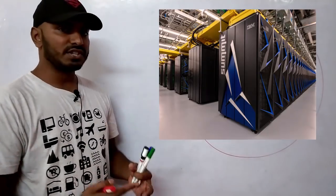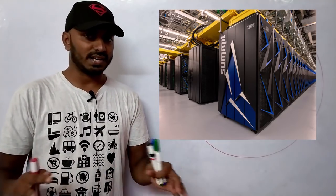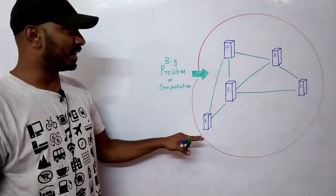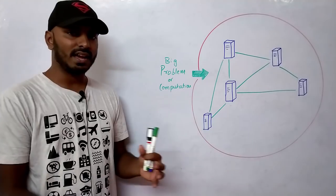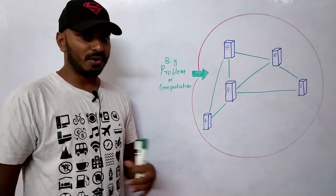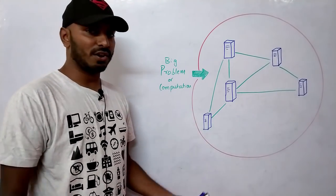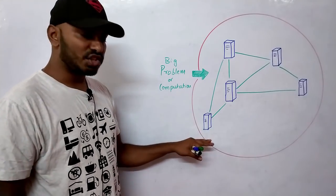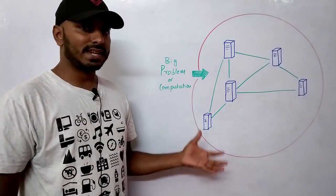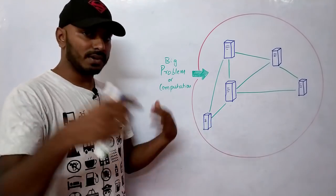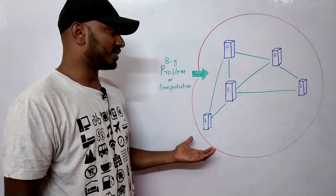Why do we need this? Why can't we just use a supercomputer? Because supercomputers are expensive, and if they fail, all your data is gone. With distributed computing, you use commodity computers — very generic machines like those we use at home — which are very cheap, and networking costs are much lower. These machines can be in the same place or different locations, connected via a network cable or LAN.